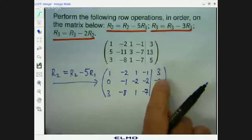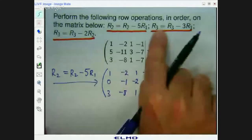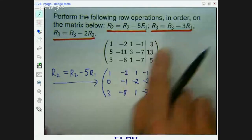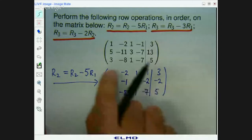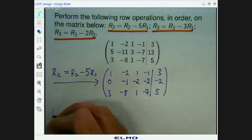All right. Let's keep going. The next operation is, in the new matrix, row 3 equals row 3 minus 3 times row 1. So we want to take this row and minus 3 times that row from it. So this is the way I do it.